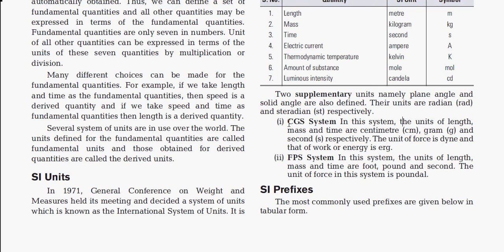We have fixed measurement systems like the CGS system and the FPS system. In the CGS system: C stands for centimeter, G for gram, and S for second. Length and distance are measured in centimeters.